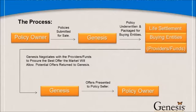Once Genesis has procured offers, we will present those offers. Generally, the highest offer is what is accepted by a policy seller. Very often, an offer will not be procured if we cannot create an arbitrage. But the point of the process is to allow a policy owner to be aware of whether or not their policy can be monetized today.